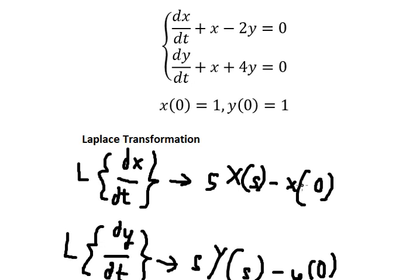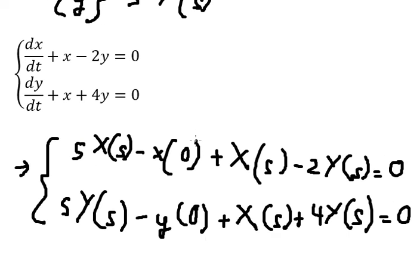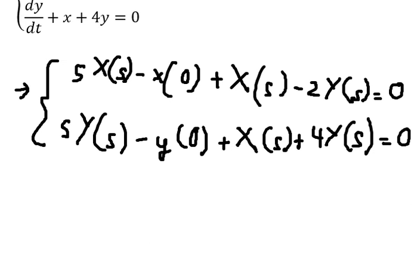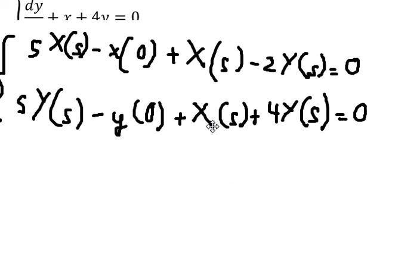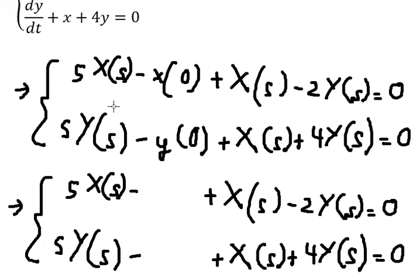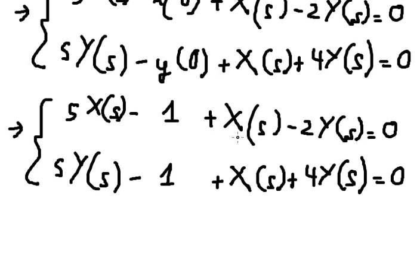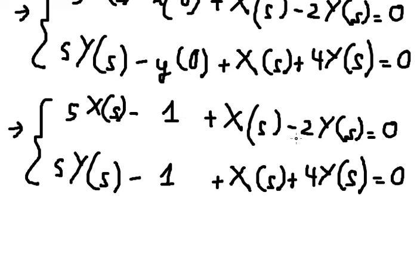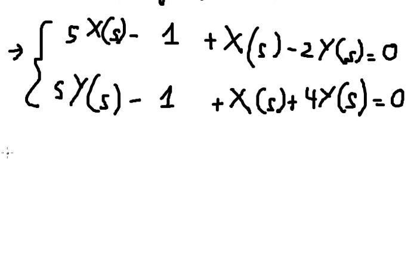So we have the initial conditions. We put 1 in here and 1 in here. Then we put 1 in here, and for S(s) we can do factorization. Negative 1 and negative 2·Y(s) we put on the right side, so we have it like this.